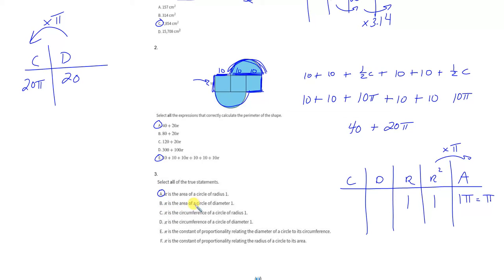Part B: pi is the area of a circle that has a diameter of one. Well, if the diameter is one, the radius is a half, and a half times a half is a quarter, and a quarter times pi is 0.25 times pi, which is not pi. So I do not agree with that. Not the same thing.